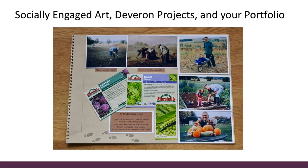To give you a flavor of the Projects course — that's in the second semester — the video you just saw was for the Projects course two years ago. This past year we worked with Devrin Projects, a local arts organization based in Huntley in Aberdeenshire. Huntley is a smaller town north of Aberdeen, and it's not necessarily a town you would expect to have an experimental art venue. The work that they've done there is quite grassroots and they've really built up a following for the type of work they do over the years.